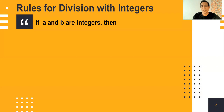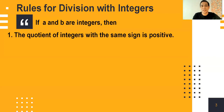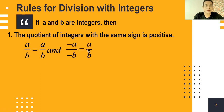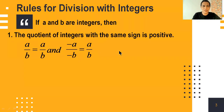Rules for division with integers. Rule one: the quotient of integers with the same sign is positive. So positive a divided by positive b gives a positive result. Similarly, negative a divided by negative b equals positive a over b — meaning if we divide two negative numbers, the quotient is always positive.